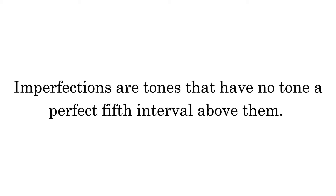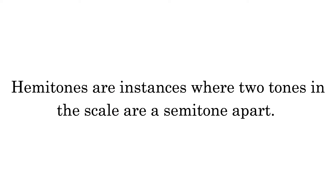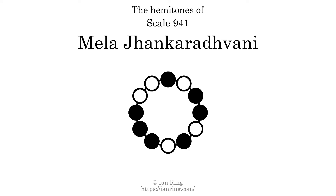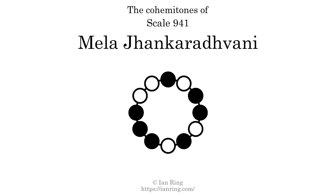Imperfections are tones that have no tone a perfect fifth interval above them. This scale has two imperfections, here and here. Co-hammertones are instances where two tones in the scale are a semitone apart. This scale has three hammertones, here, here, and here.